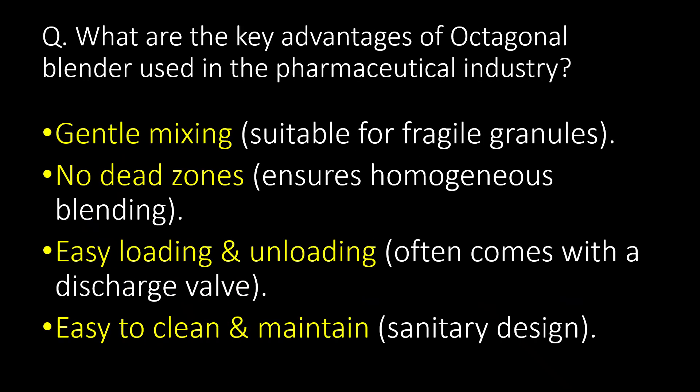A very commonly asked question: what are the key advantages of an octagonal blender used in the pharmaceutical industry? First, gentle mixing — suitable for fragile granules. Second, no dead zones — ensures homogeneous blending. Third, easy loading and unloading — often comes with a discharge valve. And fourth, easy to clean and maintain — sanitary design.